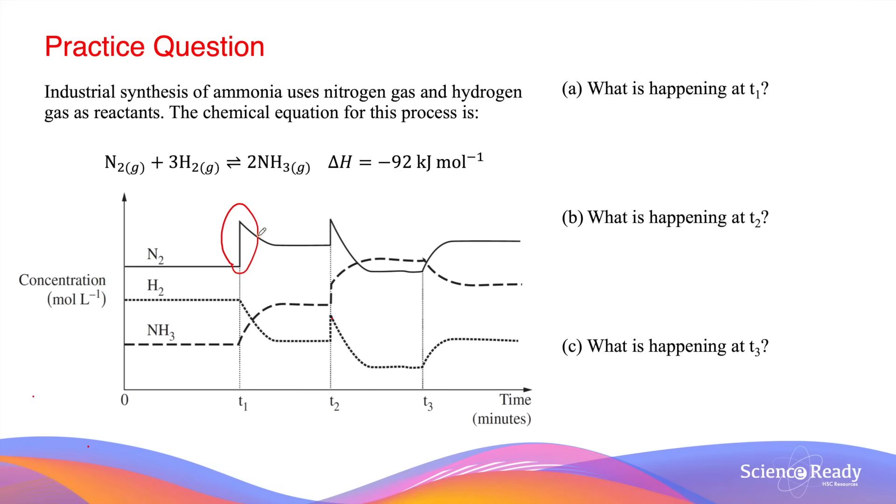So, for example, if the nitrogen's concentration suddenly spikes, this indicates that some amount of nitrogen gas has been added to the system. At T1, while the concentration of nitrogen increases, it's important to notice that the concentrations of the other two chemicals have not changed.